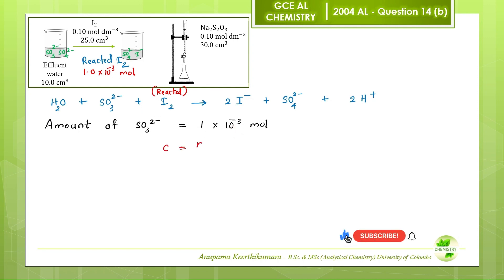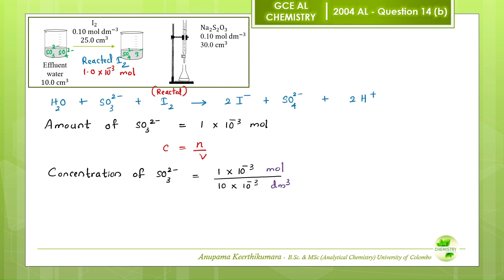Concentration equals n over V. We have calculated the number of moles of sulphite ions, and the volume of the effluent water sample is 10 cubic centimetres. We have to convert this into cubic decimetres by dividing by 1000. Therefore, the concentration of sulphite ions equals 1 × 10⁻³ moles divided by 10 × 10⁻³ cubic decimetres, giving a concentration of 0.1 moles per cubic decimetre.